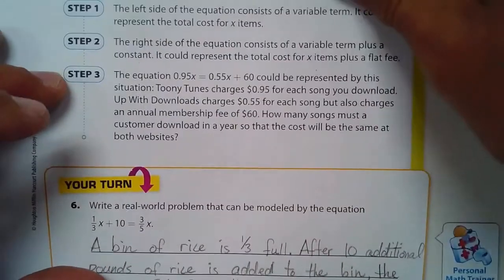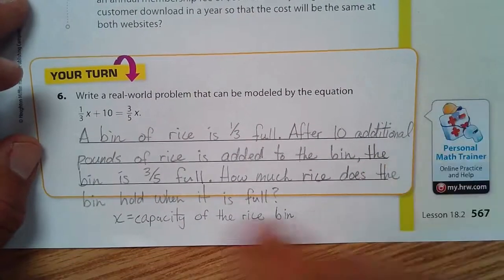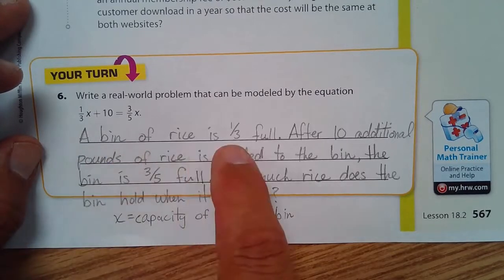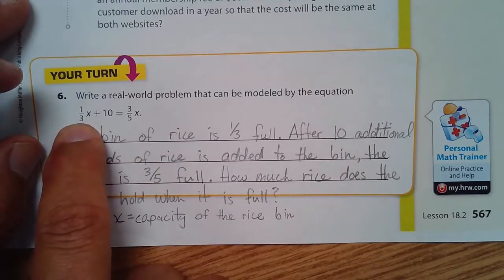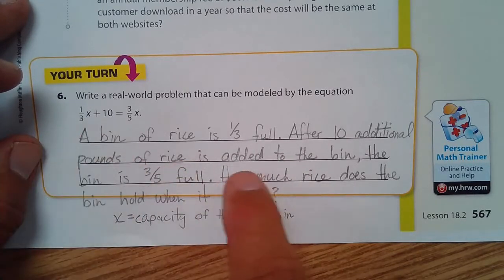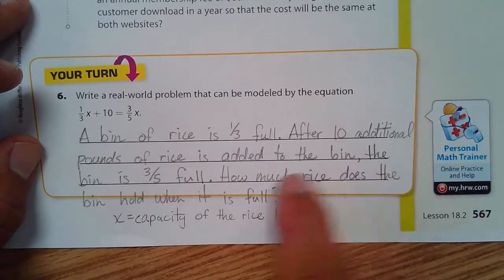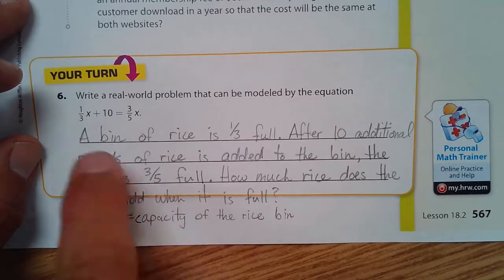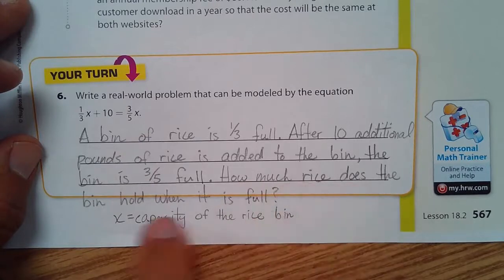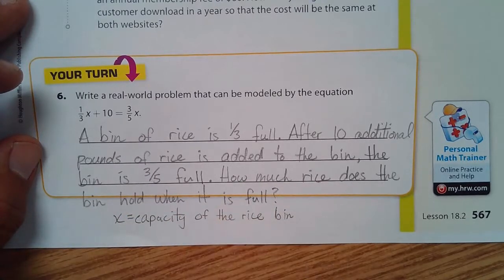Your turn, a real-world problem that could be modeled by this. I say a bin of rice is a third full. After 10 additional pounds of rice, it's added to the bin. The bin is three-fifths full. How much rice does the bin hold when it's full? There you go. And x stands for the capacity of the rice bin.